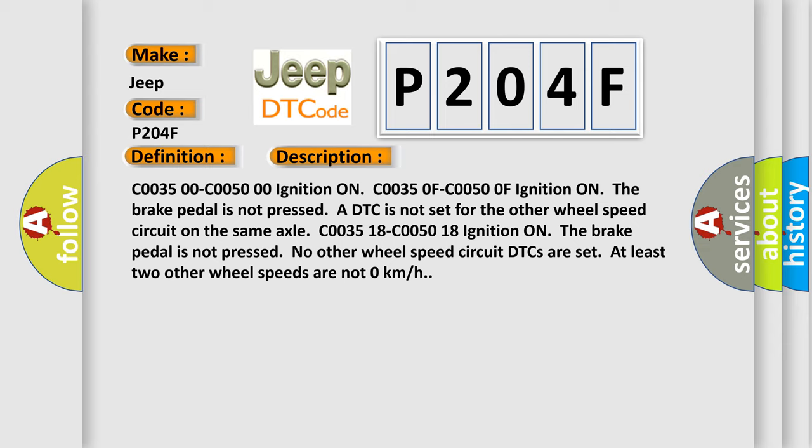C0035 18 C0050 18 ignition ON. The brake pedal is not pressed. At least no other wheel speed circuit DTCs are set. At least two other wheel speeds are not zero kilometers per hour.